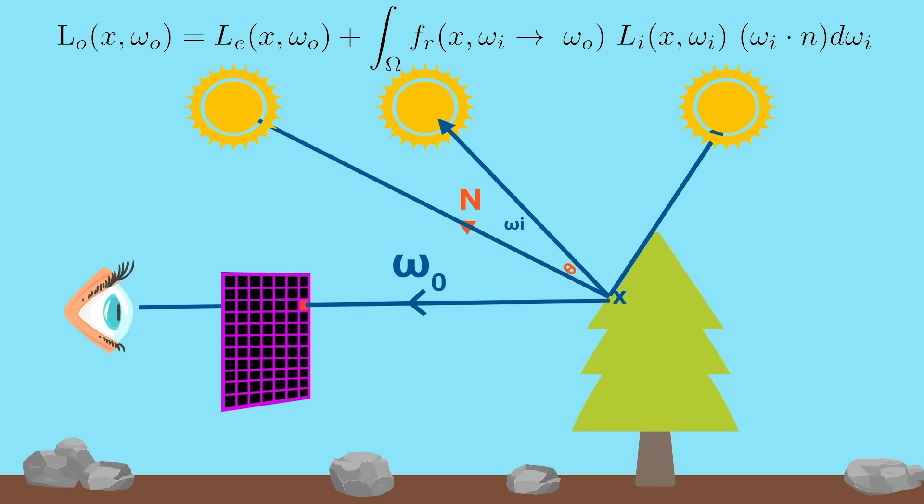And from here, all we have to do is add up all the incoming light from all of those omega i's which is what the integral tells us to do. So, that's the idea behind the rendering equation.